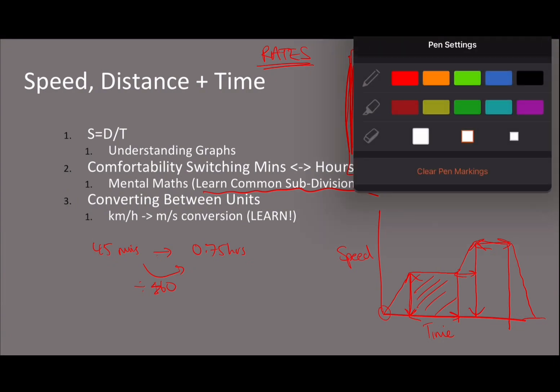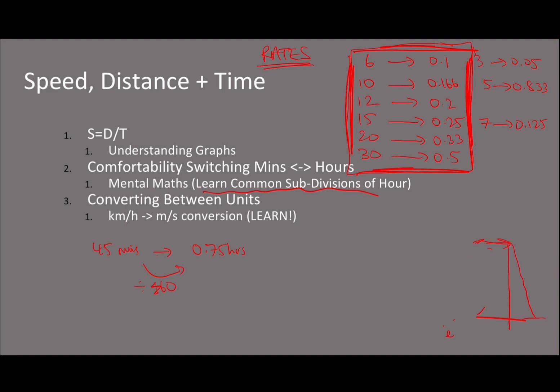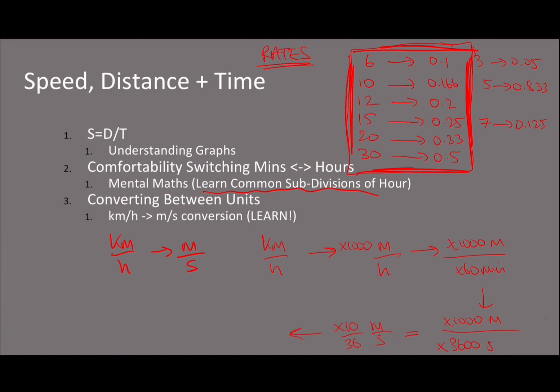Converting between units is really important. You need to understand where units come from and how to manipulate them. One common conversion is kilometers per hour to meters per second. Many students don't know this conversion, but it's easy. Take it step by step: kilometers per hour to meters per hour (1,000 meters in a kilometer), then to meters per minute (60 minutes in an hour), then to meters per second (60 seconds in a minute). So multiply by 1,000 then divide by 3,600, which equals multiplying by 10/36 or 5/18.